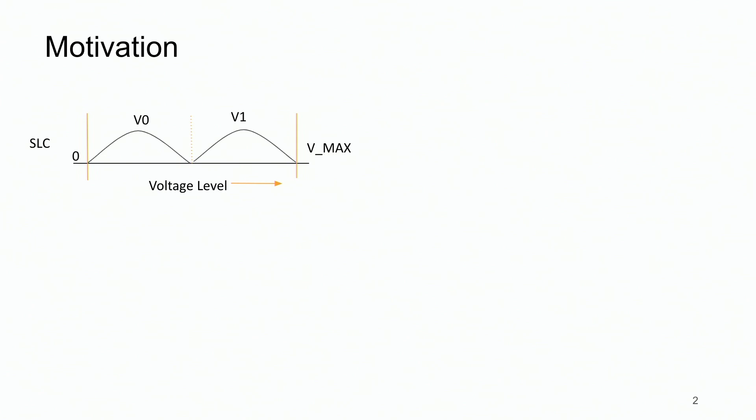SSDs store data in cells in the form of voltage levels. For example, the earliest generation of SSDs called a single-level cell drive or SLC drive stored a single bit of data represented by one of the two distinct voltage levels, V0 or V1.